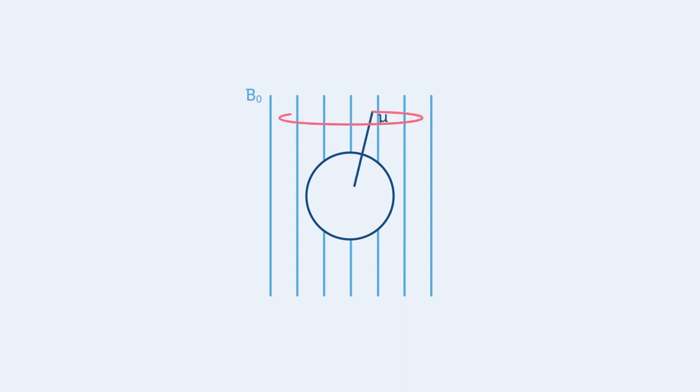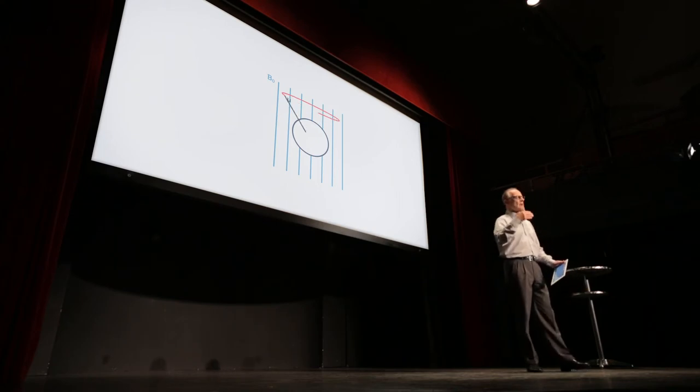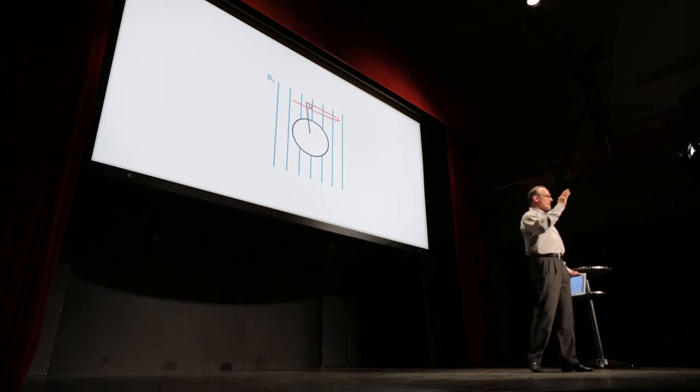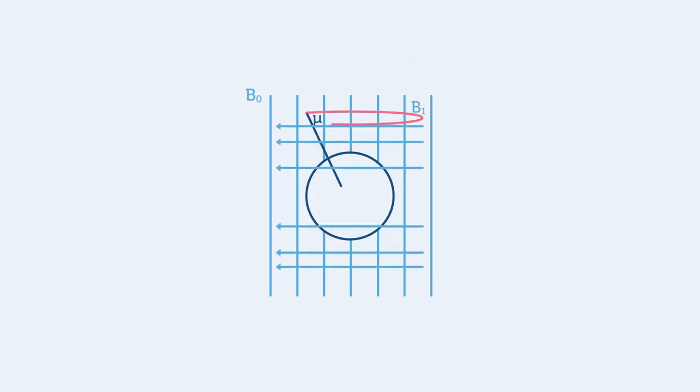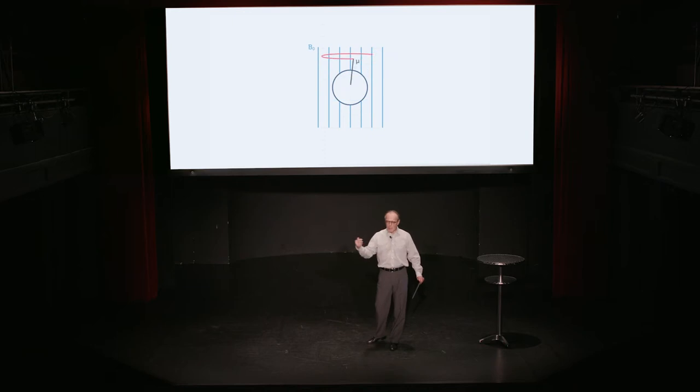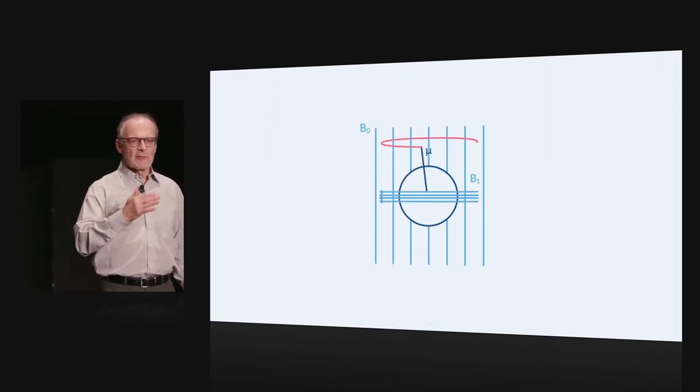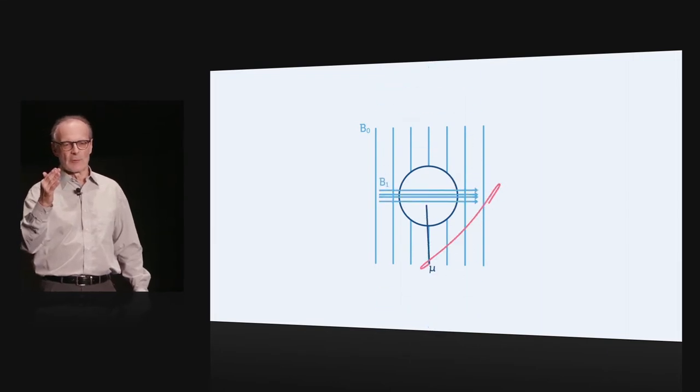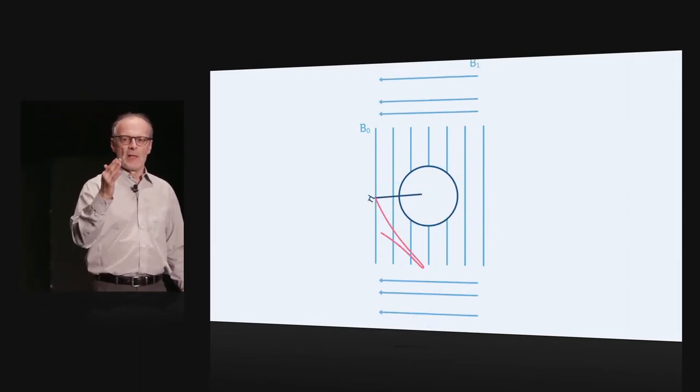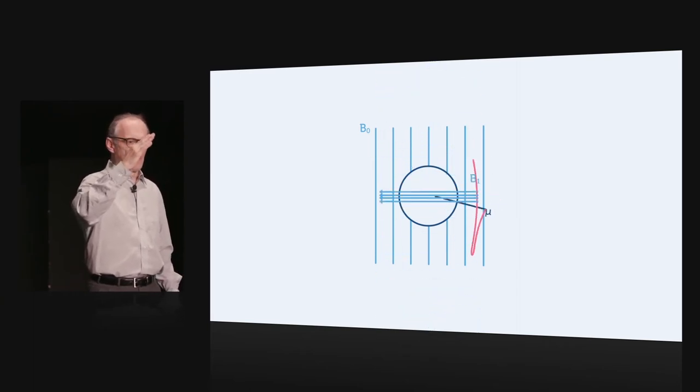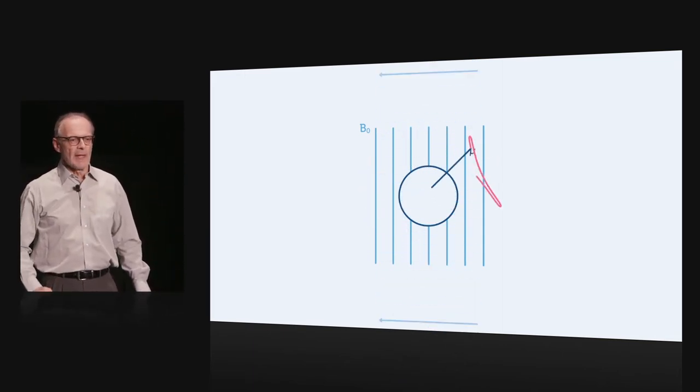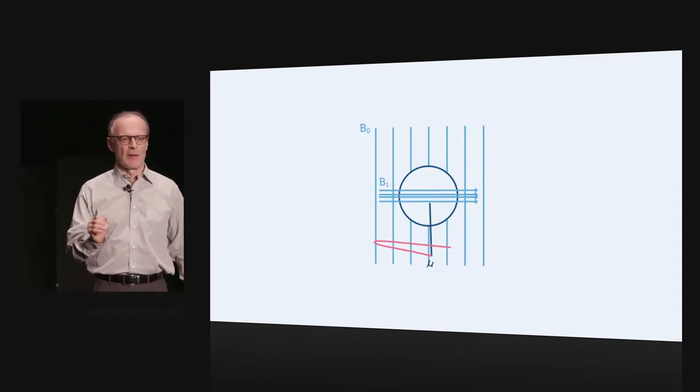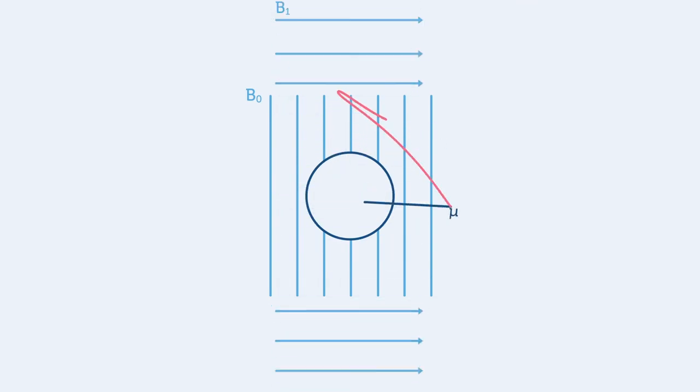How do we measure the Larmor frequency? If you crank through the math, it turns out that you can influence the direction of the mu vector by applying a small alternating magnetic field that we call B1, perpendicular to the primary field B0. At first, not much happens. But as we increase the frequency, as soon as we hit exactly the Larmor frequency, something magic happens. All of a sudden, the magnetic moment starts to flip and gradually moves away from the B0 direction. This is the magnetic resonance that we're talking about, the nuclear magnetic resonance that NMR stands for.